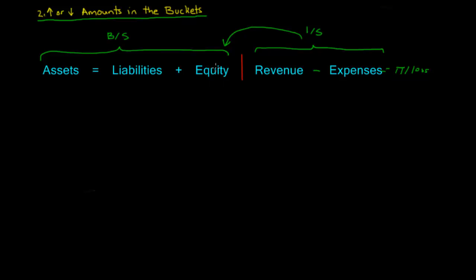Equity is a function of what was invested initially, as well as the revenues and expenses. In order for everything to balance correctly, we need to have a system whereby we can record things that affect both sides of the equation and not one side. And this is what's known as double entry accounting.